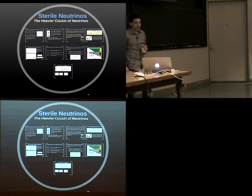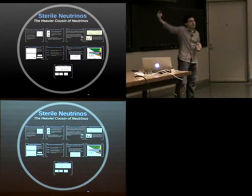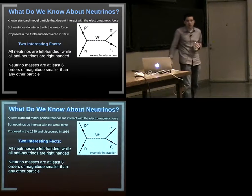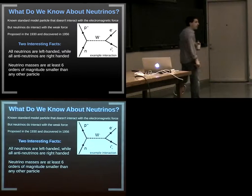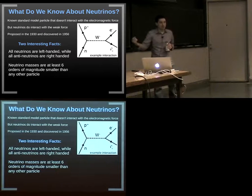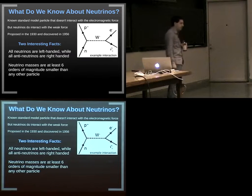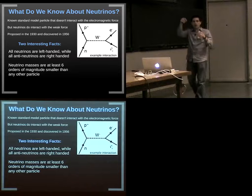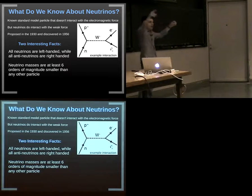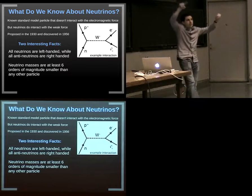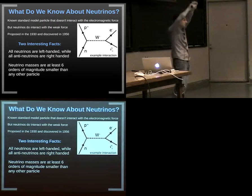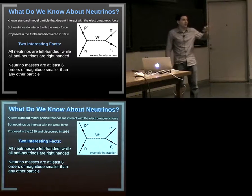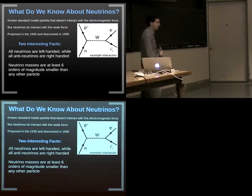Now let's talk about the sterile neutrino — a heavier cousin of the light neutrinos in the standard model. What do we know about neutrinos? They're a known standard model particle that doesn't interact electromagnetically but does interact via the weak force. They were proposed in 1930 and discovered in 1956. The reason is that in muon decay, the energy didn't appear conserved until you accounted for neutrinos carrying away energy — the neutrino was proposed to solve that energy conservation problem, and it turned out to be right.